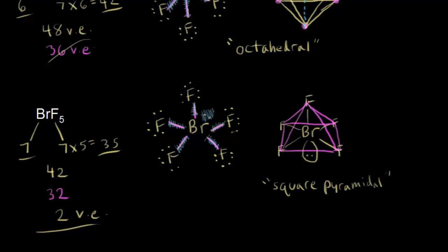In terms of bond angles, our ideal bond angles are going to be 90 degrees. So that bond angle is 90 degrees, and this bond angle in here is also 90 degrees. So our ideal bond angles are all 90 degrees for our square pyramidal geometry.